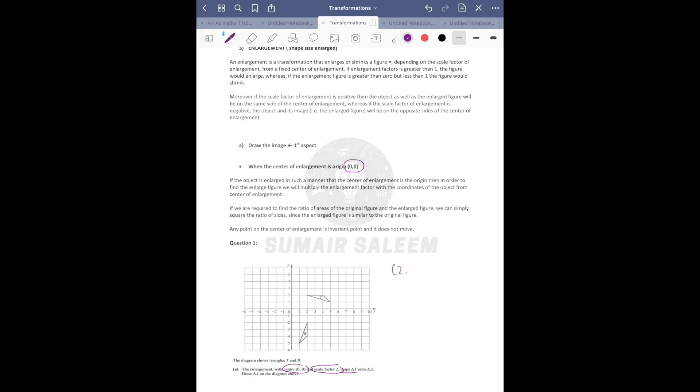T ke first coordinates are 2,2, 4,2, 5,1. Done. And just multiply it with the scale factor, that's 2. So my answer is 4,4, 8,4, 10,2.